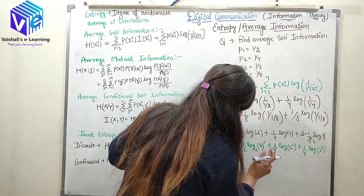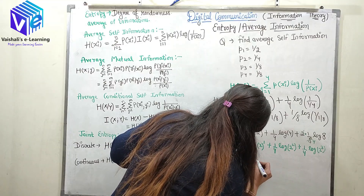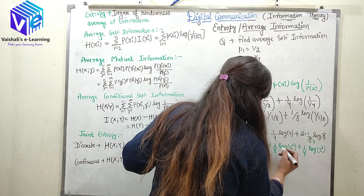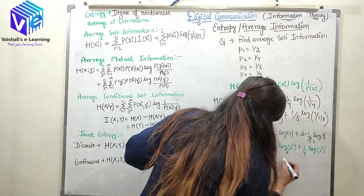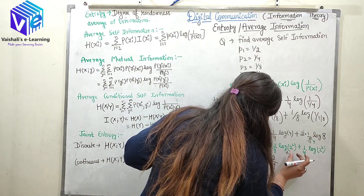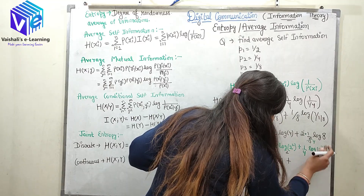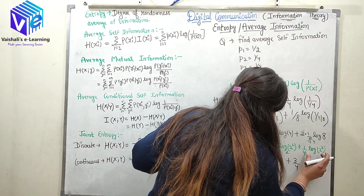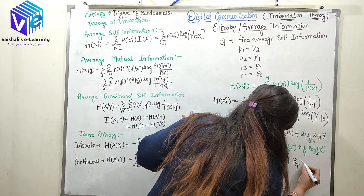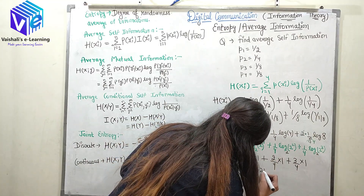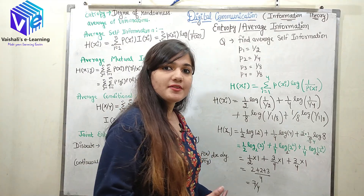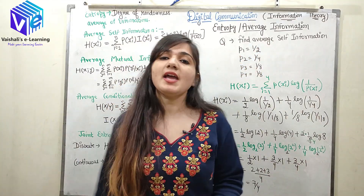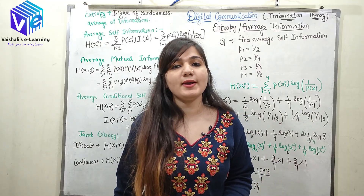Since log base 2 of 2 equals 1, each term simplifies: (1/2)·1 = 1/2, then (1/4)·2 = 2/4 = 1/2, then (1/8)·3 = 3/8, and again (1/8)·3 = 3/8. Adding these up gives 1/2 + 1/2 + 3/8 + 3/8 = 7/4. So the average self-information for this group of symbols is 7/4.